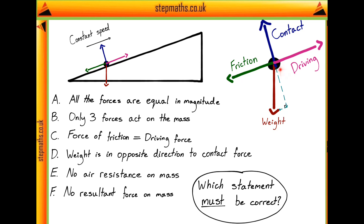The reason I've done this is because perpendicular to the slope, this component of the weight shall be in the same direction as the contact force, and the parallel component shall be parallel to the driving force and our frictional force. Now we know there must be a driving force because the ball is moving up at constant speed. If there wasn't any driving force, the only forces acting would be weight and friction, and therefore it would be moving down the slope. So we know we've got a driving force, and we can assume there's a frictional force.